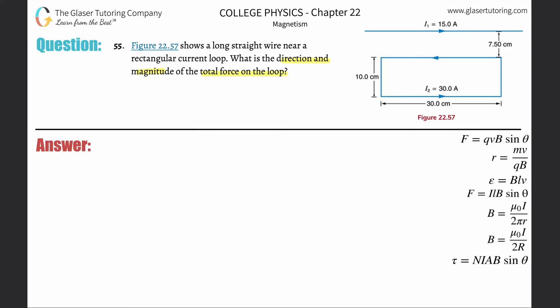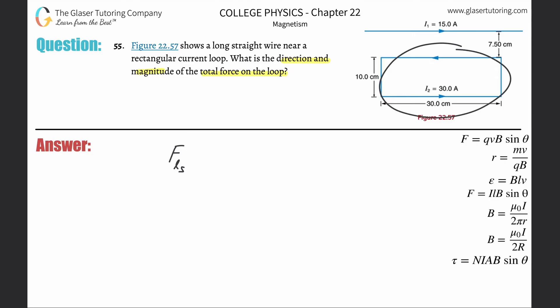So if I want to find the force on the loop — I'll call it F_L — the force on the loop is being produced by that other straight wire, because this loop doesn't produce a force on itself. There has to be some external thing producing a force on it.